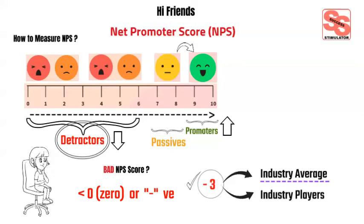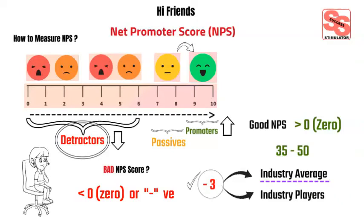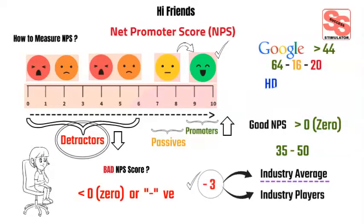What is the industry average? A score of 35 to 50 is considered to be an industry average. However, any score above zero reads as good because it indicates that a business has more promoters than detractors. In the US, customer experience leaders enjoy an NPS that is 21 points higher than the NPS of customer experience laggards. Google's Net Promoter Score is 44, with 64% promoters, 16% passives, and 20% detractors. HDFC Bank's Net Promoter Score is 36, with 57% promoters, 10% passives, and 21% detractors.